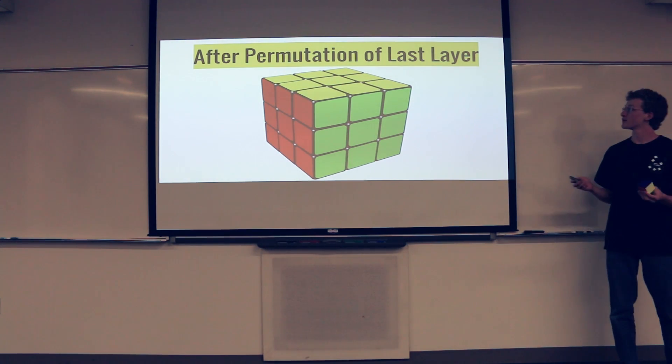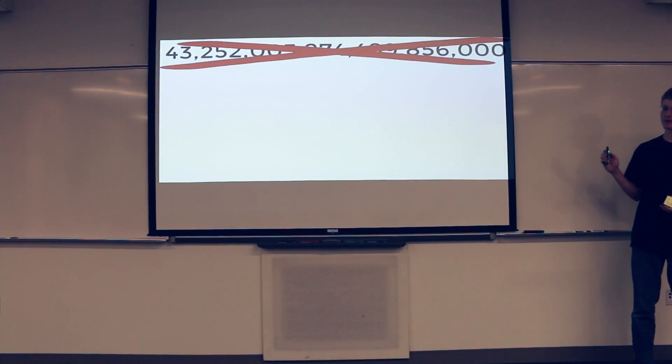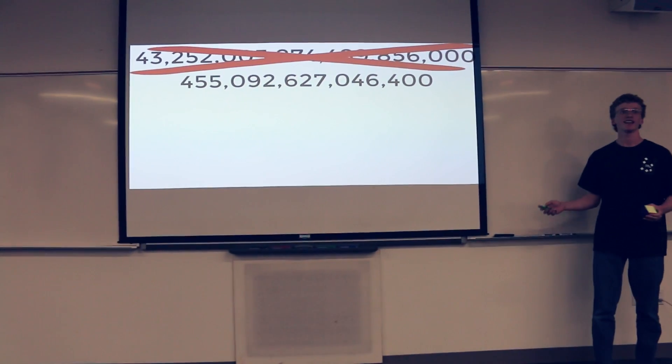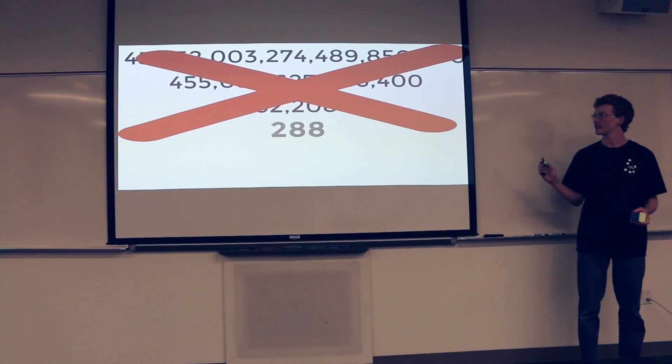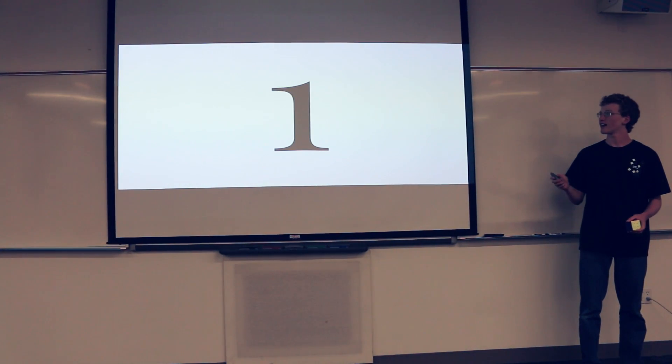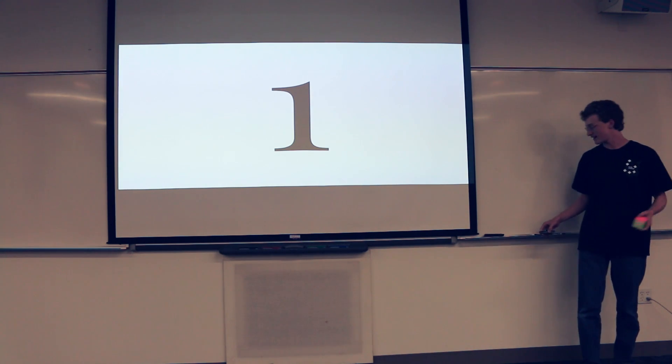So, after the permutation of the last layer, just moving the pieces around to the correct spot, we've gone down from more than 43 quintillion, to 455 trillion, 62,288. And now we're down to only one common permutation that looks like this. So that's about it.